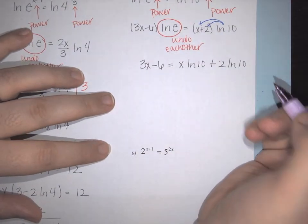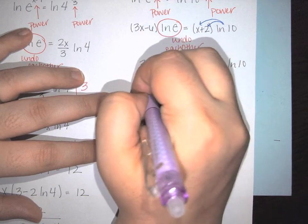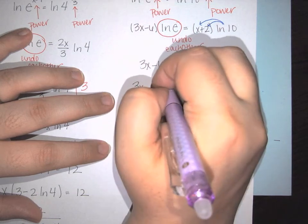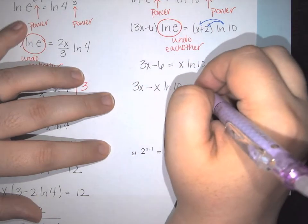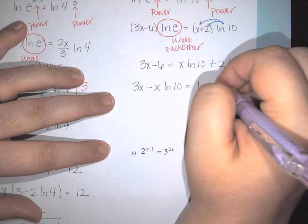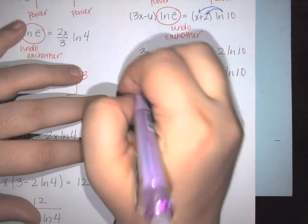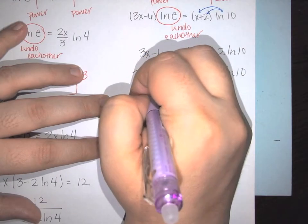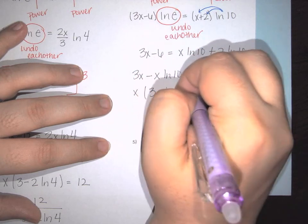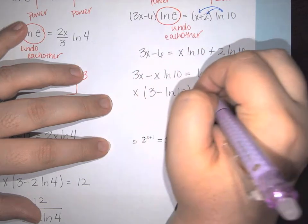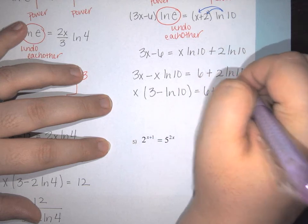I need to get all x's to one side: 3x minus x natural log of 10 equals 6 plus 2 natural log of 10. Pulling the x out leaves (3 minus natural log of 10) times x on the left side.